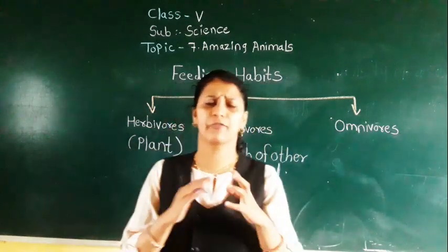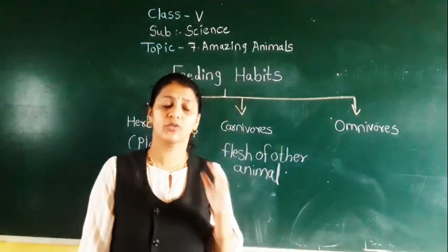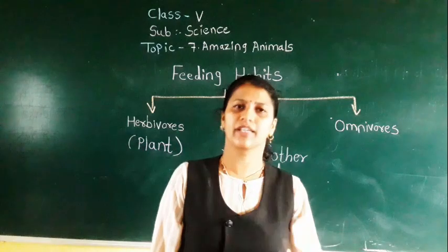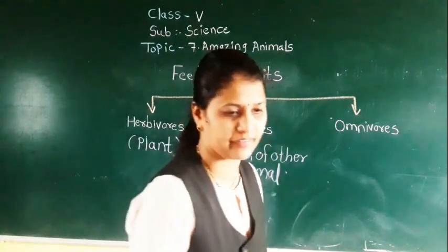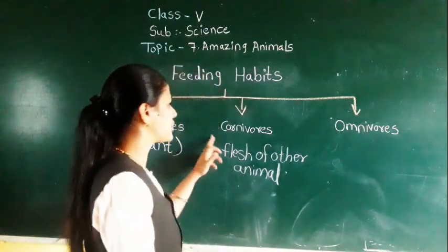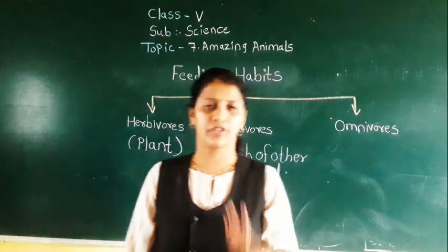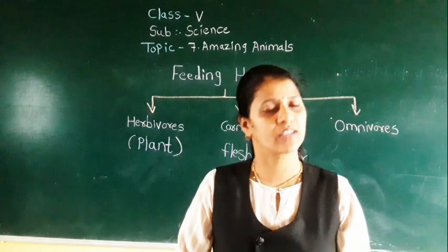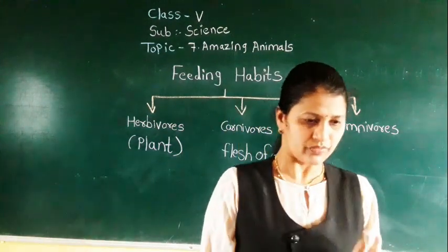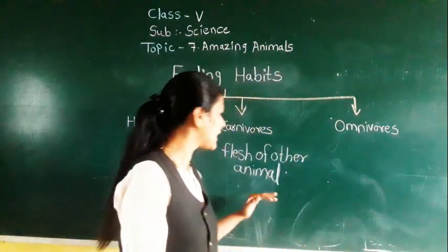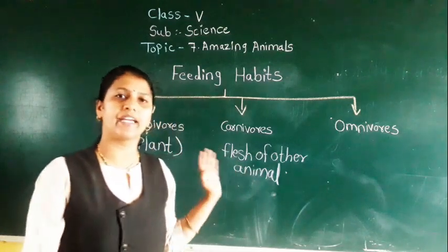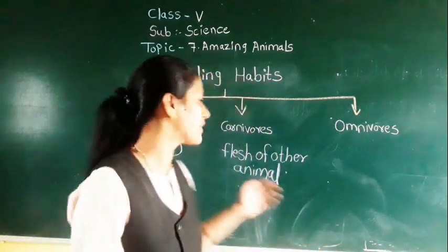Carnivorous animals have sharp canines and well-developed molar and premolar teeth — very strong back teeth for chewing the flesh of other animals. Some birds also come under carnivorous, such as vulture and eagle. They have a very strong hook which helps them eat the flesh of other animals or birds. So vulture and eagle come under carnivorous.